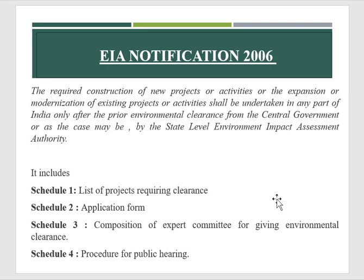This environmental clearance process has four schedules: Schedule 1, 2, 3, and 4. The first schedule is the list of projects requiring clearance from the central government — all the projects which are needed to go through this clearance are initially listed.